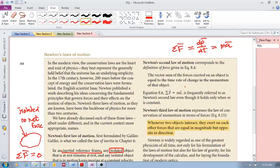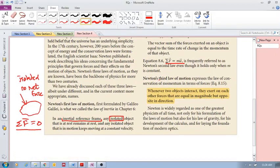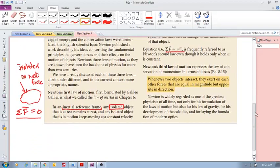But remember, like we said a few minutes ago, this is only valid when your mass is constant. Third one, Newton's third law expresses the law of conservation of momentum. Whenever two objects interact they exert on each other forces that are equal in magnitude but opposite in direction.